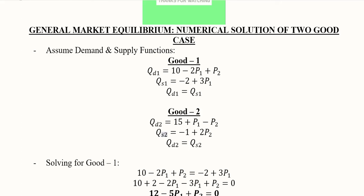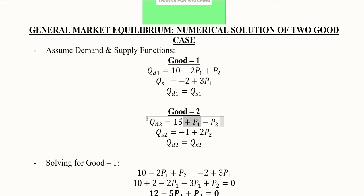A key signal in these demand equations is that the price of the other good appears in each. In the demand equation for good one, p2 has a positive sign, meaning if good two gets more expensive, demand for good one increases — indicating good two is a substitute for good one. Similarly, p1 appears with a positive sign in the demand equation for good two, confirming they are substitutes. If those signs were negative, the goods would be complements.